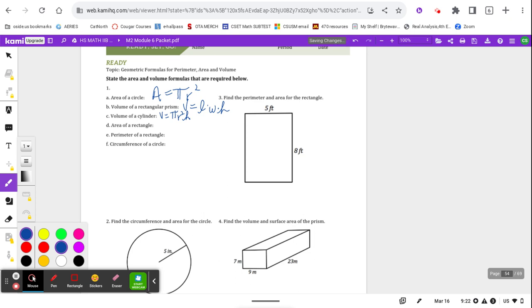The area of a rectangle is length times width. The perimeter of a rectangle is two widths and two lengths. And the circumference of a circle is 2 pi r.